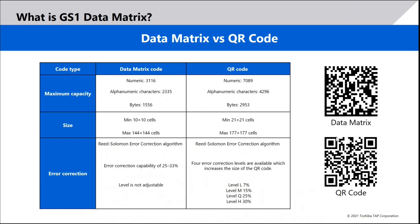Both codes have error correction capabilities, meaning that unlike a standard 1D code — the old 13-digit code seen on most retail packages — the data can still be read even if the code is partially removed or damaged. Error correction for both codes is achieved using Reed-Solomon error correction algorithms, a mathematical method that adds redundant data into the code. QR codes offer multiple levels of error correction, which increases the size of the code as the level is increased.